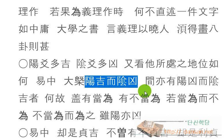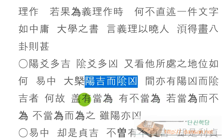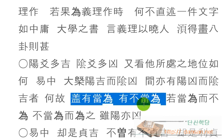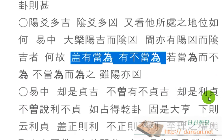주역에서는 길흉이 있다. 그 다음에 그 처한 위치가 득중이냐 득정이냐, 부득중이냐 부득정이냐, 이것도 봐야 되는 거고. 그 다음에 이제 당이냐 부당이냐 그걸 봐야 되는 거에요. 만약 마땅히 해야 되는 데에도 하지 않고, 마땅히 해선 아니될 것인데도 하게 된다면, 비록 양이라 하더라도 또한 흉악이 되라.